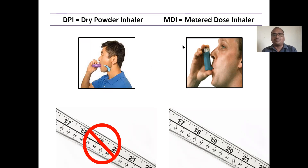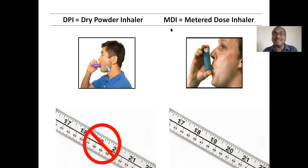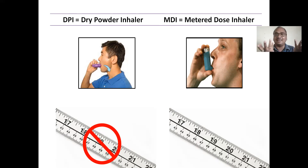Why have they given the name 'metered dose'? Meter means measurement — you can measure the dose. That's why this is called a metered dose inhaler. How much you have inhaled, everything can be measured in the MDI. Whereas this measurement is not possible in the dry powder inhalers — how much powder the patient has inhaled, we cannot measure. Even the patient does not know how much he has inhaled.